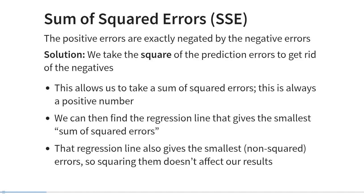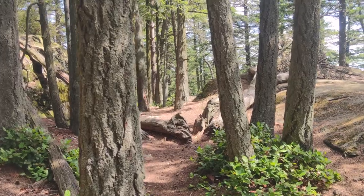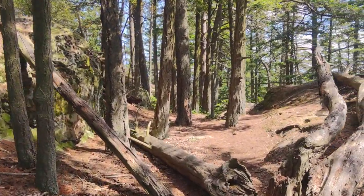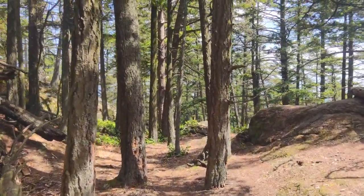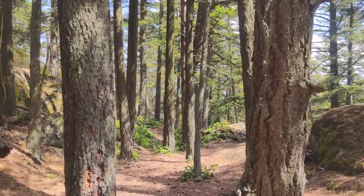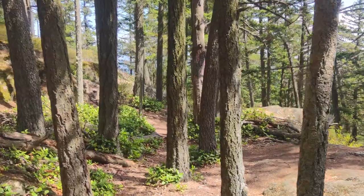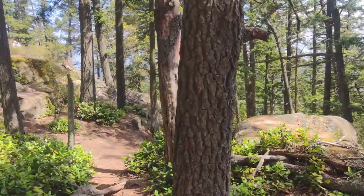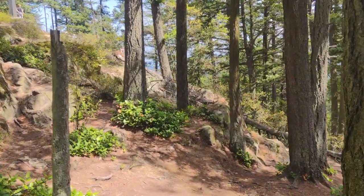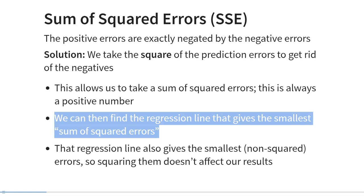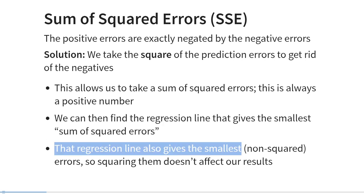The problem is that the positive errors are always exactly negated by the negative errors. The solution is to get rid of the negatives by taking the square value of all of the prediction errors. Taking the square of values is a mathematically simple procedure to get rid of any negative values, and this allows us to take a sum of the squared errors, which will always result in a positive number. That in turn allows us to find the regression line that gives us the smallest sum of squared errors. Note that squaring the errors doesn't affect the parameter values that we find.